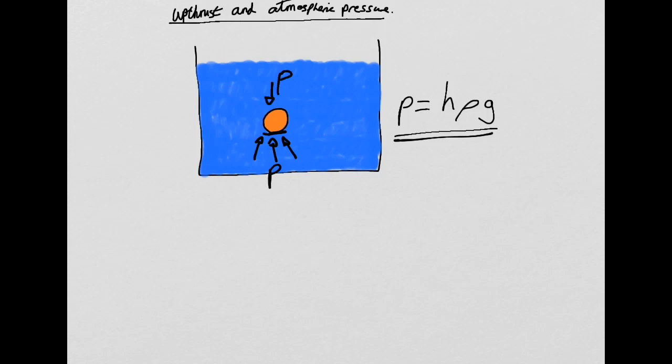And it's this pressure differential that causes the force of upthrust. So more pressure on the bottom, less pressure on the top, and that is going to cause upthrust.